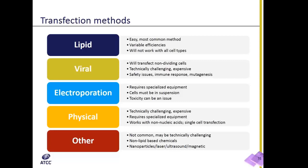The next method is physical methods. These methods usually involve equipment that is actually used to penetrate the cell membrane. A common example of this is microinjection, which uses a needle to deliver the nucleic acid to the cell. The equipment is very expensive, requires a lot of training, and can only process one cell at a time. So it's a very laborious process with very limited use in the lab.